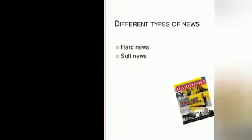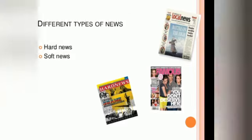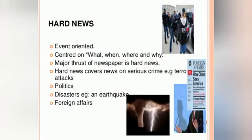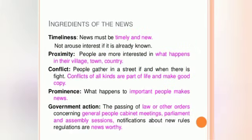There are different types of news: hard news and soft news. Hard news is event-oriented — for example, crime, attacks, and politics. Soft news covers entertainment, human interest stories, and less serious topics. Soft news is not about crime. These are the two main categories of news.